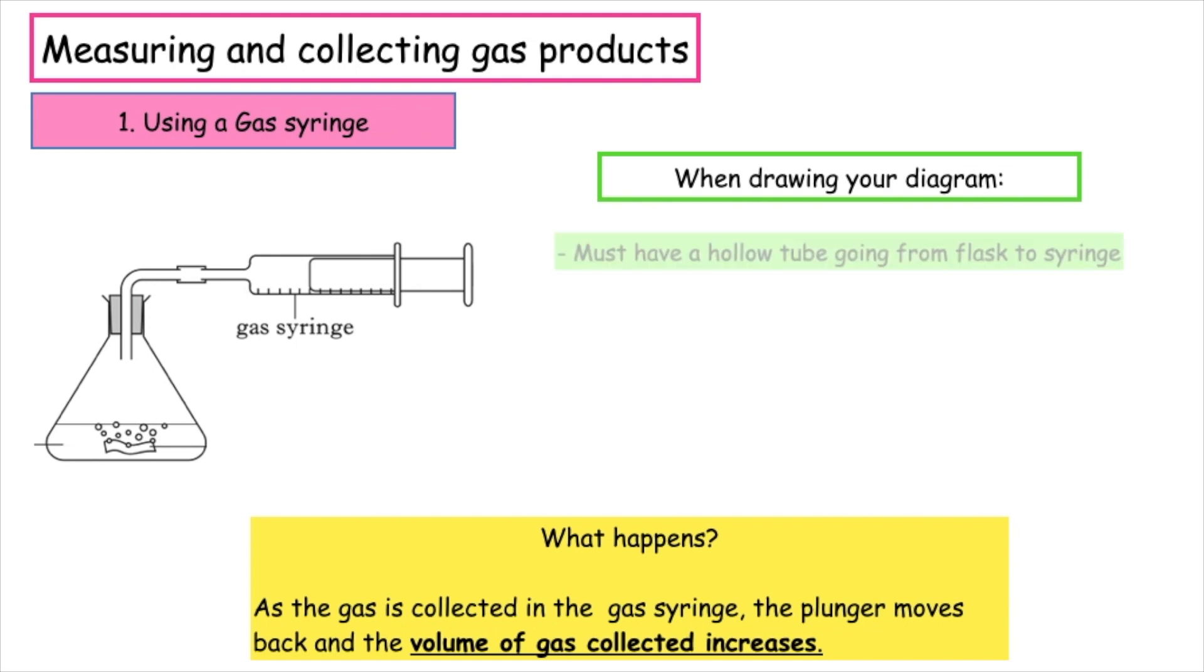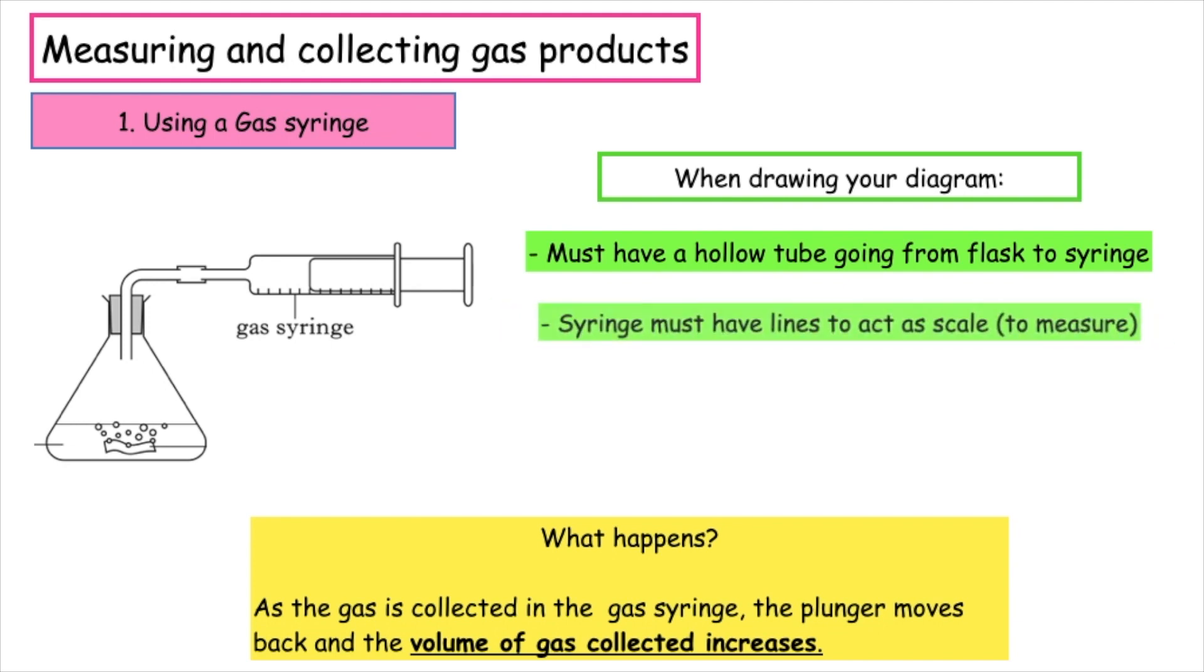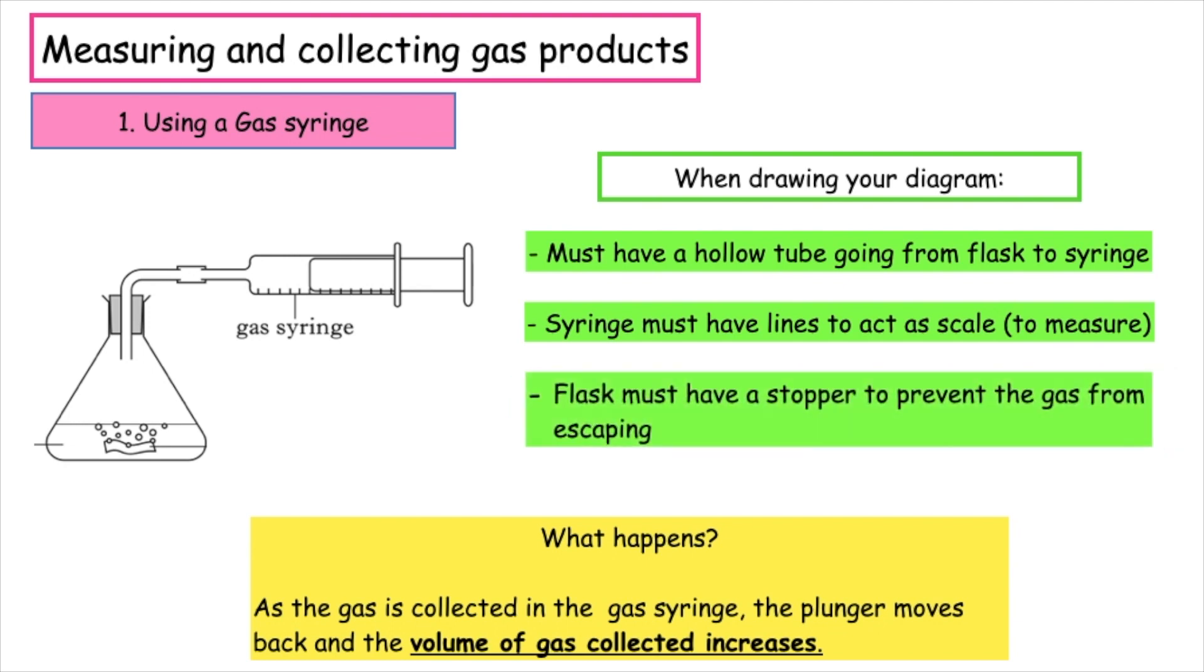When drawing your diagram, you must have a hollow tube going from the flask to the syringe to ensure that the gas can pass through. The syringe must have lines to act as a scale so that we're actually able to measure the gas products produced. The flask must have a stopper to prevent the gas from escaping, because otherwise you wouldn't actually collect the gas in the gas syringe.